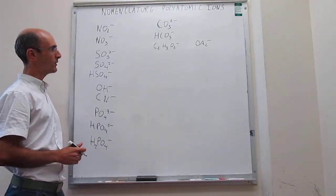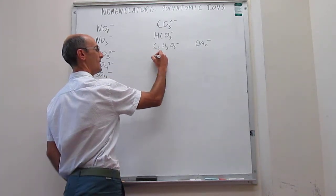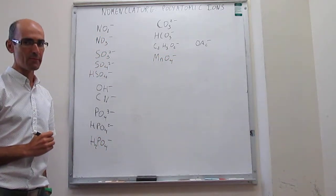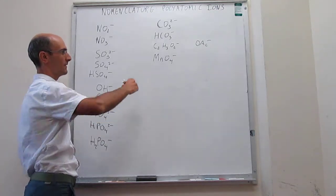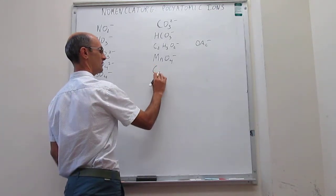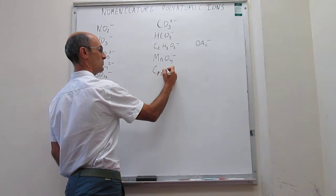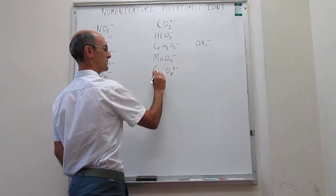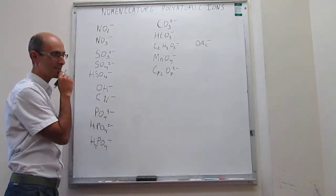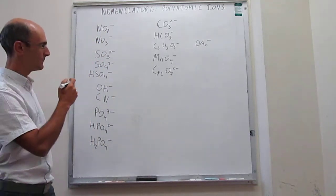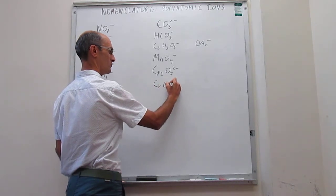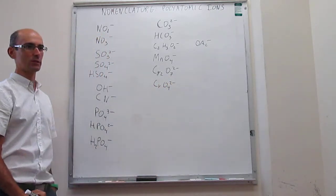So then we continue with MnO4- which is called permanganate. And then we have CrO4-2- that is called chromate.